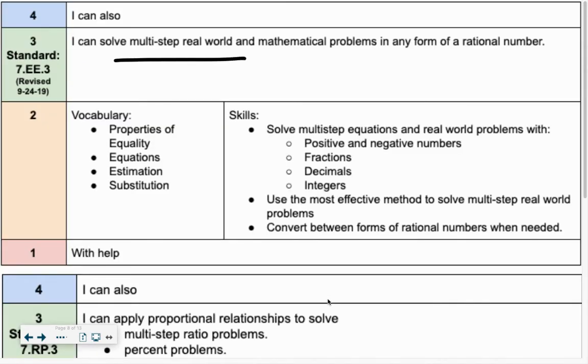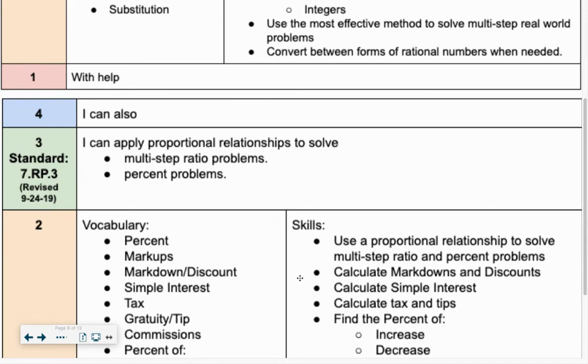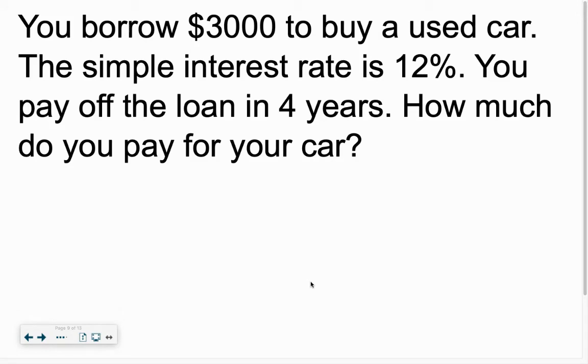Why are we doing this? Well, there are multi-step real-world problems. And we need to be able to calculate simple interest. You borrow $3,000 to buy a used car. Pretty good price for a used car. The simple interest rate is 12%. Now, interest rates can change at any time, whether we're talking credit cards, which have high interest rates, which is why you try not to get any credit card debt if at all possible, auto loans, home loans. It tells you 12%. You pay off the loan in four years. How much do you end up paying for your car?